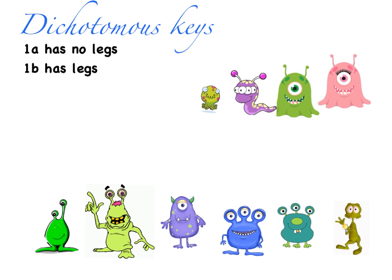I'm then going to direct the user of my key to another number to further divide each group. So this first group, I'll tell my user to go to number two — not 2a, not 2b, just number two, where we'll have instructions on how to further divide these. For the rest of them, I'm going to need to jump to number five. I have four organisms here, so I need one fewer choice than organisms — three more choices — so I go from two with an additional three, and I tell my user to go to five.